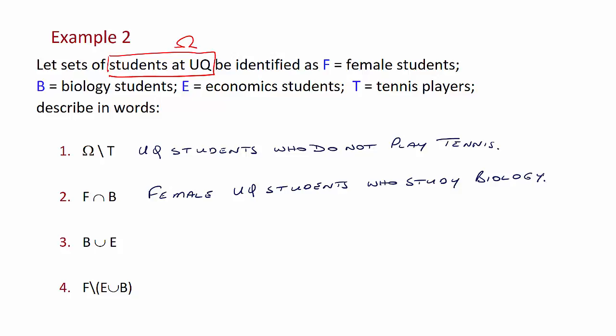Number three, B union E. So B is biology students again, E is economics students. So we have biology students or economics students. Again in everyday language we would say UQ students who study biology or economics.